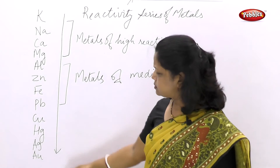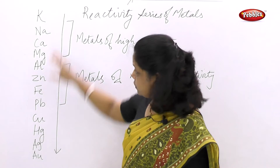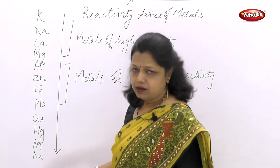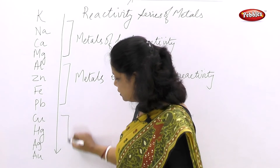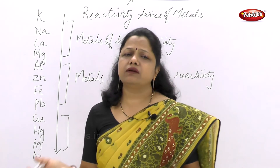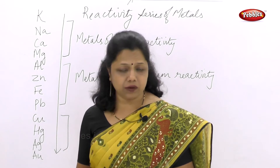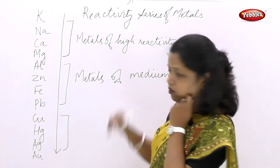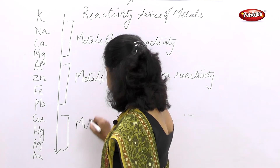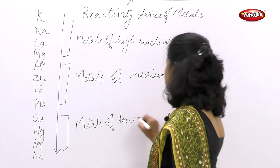They are not so reactive, but not so less reactive either, so we put them in the metals of medium reactivity. Now for the rest — copper, mercury, silver, gold — they are at the very bottom of the series. They are here because they are not so reactive and do not react easily with compounds or elements in their surroundings. So we put them in the category of least or low reactivity.